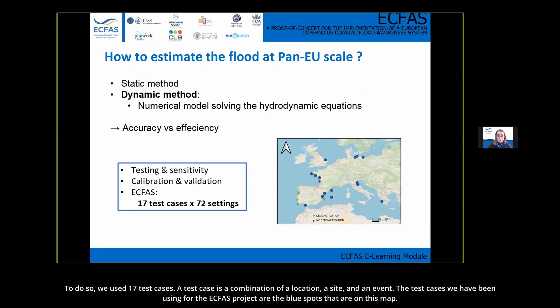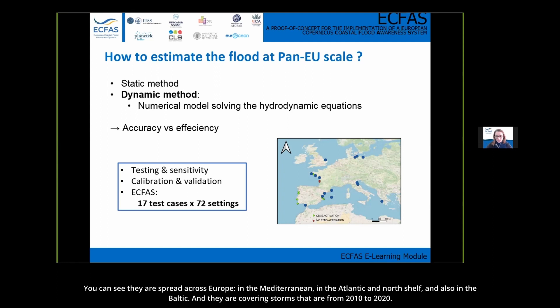To find the best configuration and method, 17 test cases were used. A test case is a combination of a location (a site) and an event. The test cases used for the ECFAS project are shown as blue spots on the map, spread across Europe — in the Mediterranean, the Atlantic, the North Shelf, and the Baltic — covering storms from 2010 to 2020.